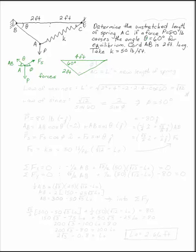This distance AC is the new length of our spring. Since we know the angle opposite it, we can use the law of cosines to show that the new length of the spring is the square root of 2 squared plus 4 squared minus 2 times 2 times 4 times the cosine of 60.